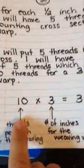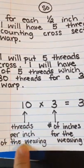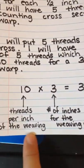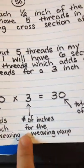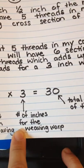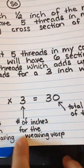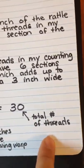So that means my 10 threads per inch of the weaving warp, I'm going to times that by the number of inches I want my warp to be, which is three, and that's going to give me my 30 threads.